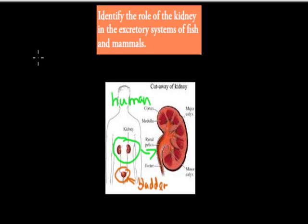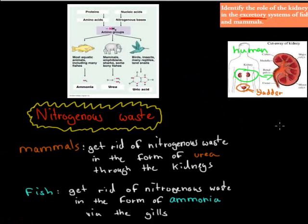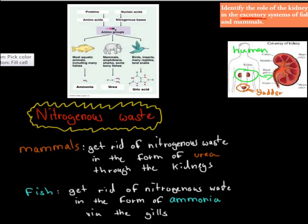The excretory system — that word excretory refers to removing — so it's the excretion removal system of fish and mammals. First I'll go over nitrogenous waste, because nitrogenous waste has to be removed by both mammals and fish. Mammals get rid of their nitrogenous waste in the form of urea through the kidneys. So one of the roles for the kidneys in mammals is to remove nitrogenous waste.